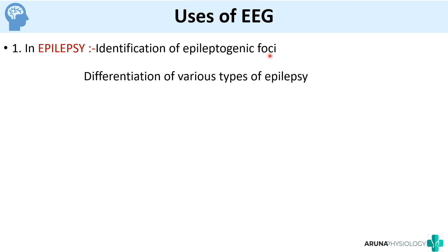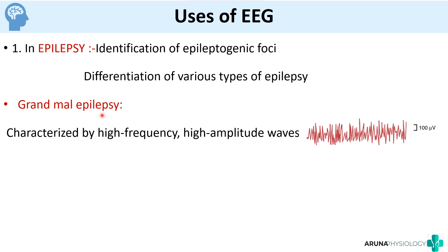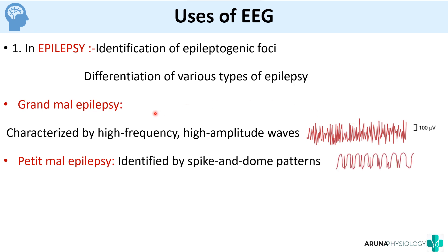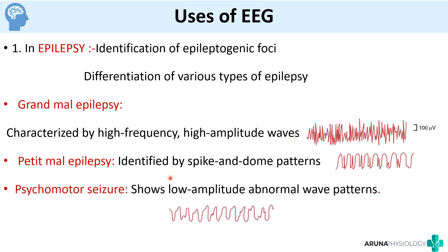In grand mal epilepsy, the person will have convulsions throughout the body and it is characterized by high frequency, high amplitude waves. Petit mal epilepsy is identified by spike and dome patterns. Psychomotor seizures show low amplitude abnormal wave patterns. So based on the different patterns produced on the EEG, you can identify or differentiate which type of epilepsy it is.